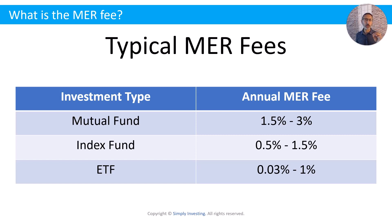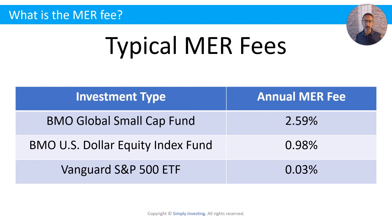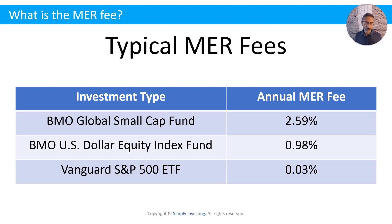Our focus for this episode is the fees. Here are some real-life examples I pulled online. The BMO Global Small Cap Fund has an annual MER fee of 2.59%. The BMO US Dollar Equity Index Fund has a fee of 0.98%. And the Vanguard S&P 500 ETF has a fee of 0.03%. I'm not endorsing or recommending any of these funds — they're just shown as examples of actual funds to illustrate what the fees look like.